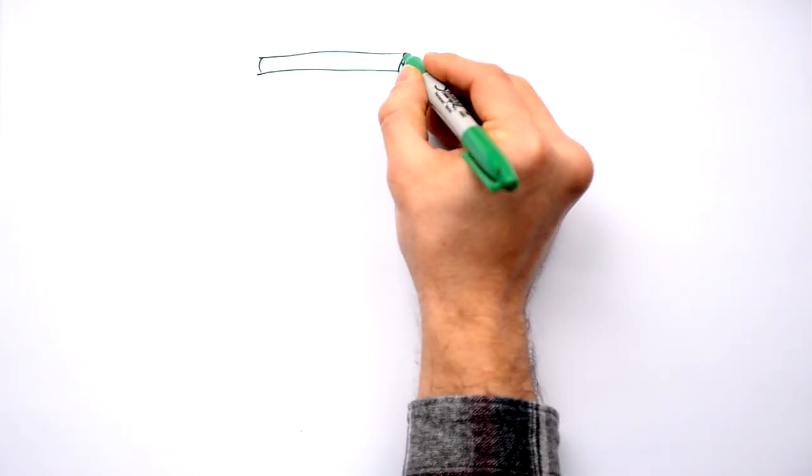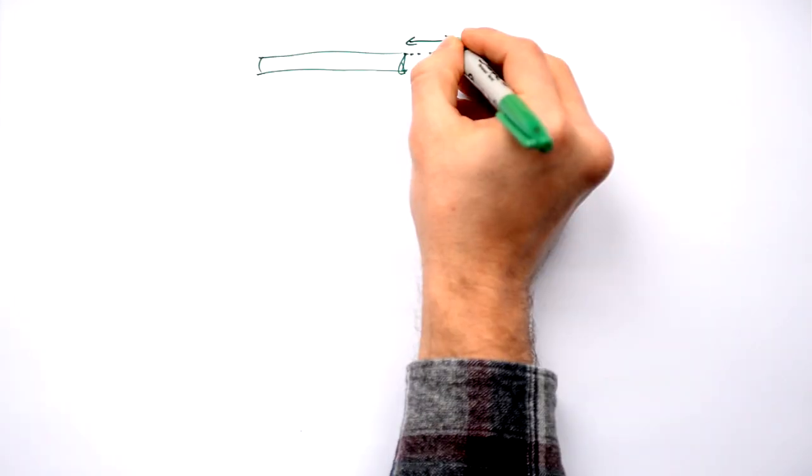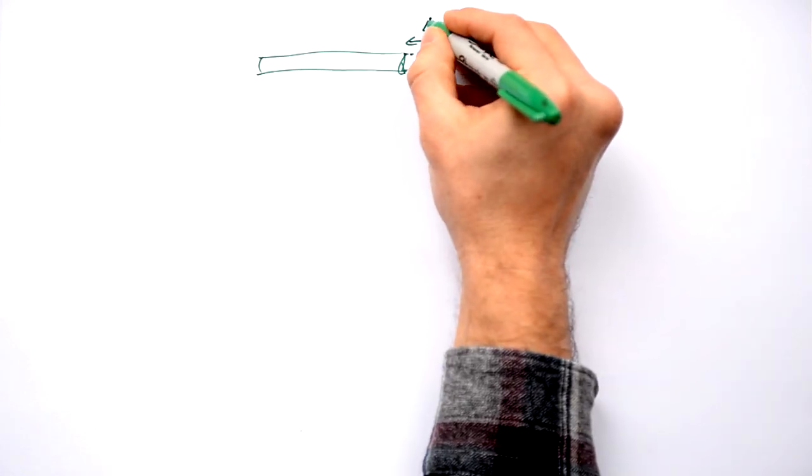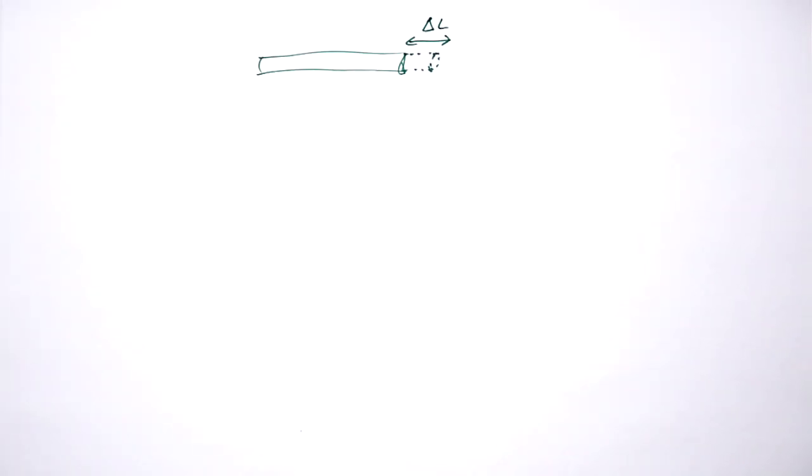What affects how much an object can be stretched? We have an object here and we want to stretch it, and so it's this long instead. We're going to call this extension here delta L. So what affects how big this extension will be?